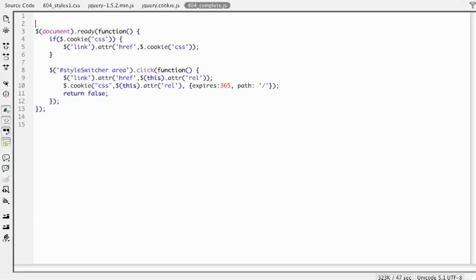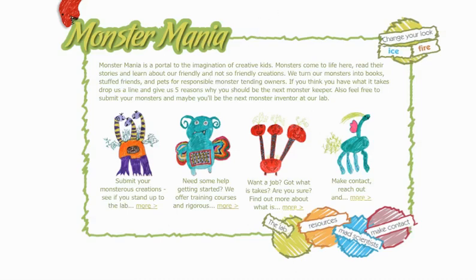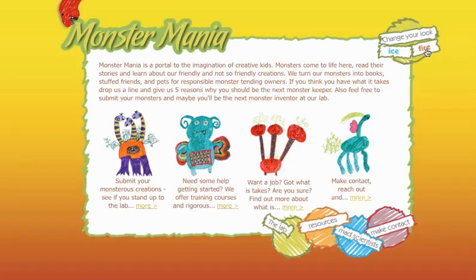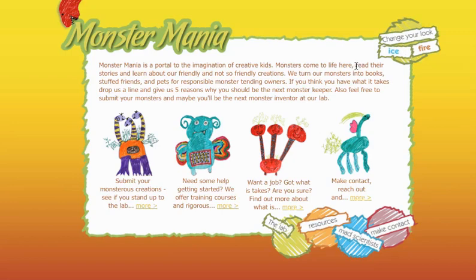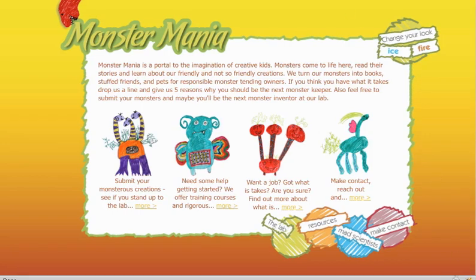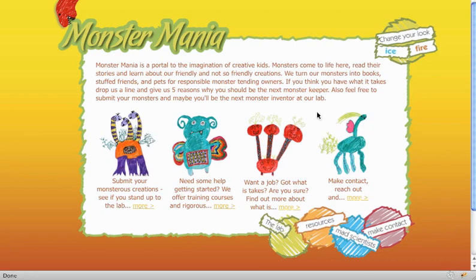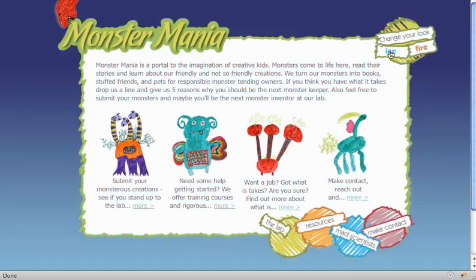Let's save this and preview it in the browser. The page looks the same, and when I click my various links to switch the styles they all work. If I do switch the style and then refresh the page, you can see that the page now stays — it remembers that I was showing the fire look. The page reloads and it stays. If I switch it to ice and refresh the page, it's going to stay and remember that. And that's because of the cookie.